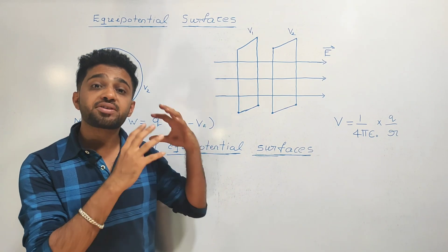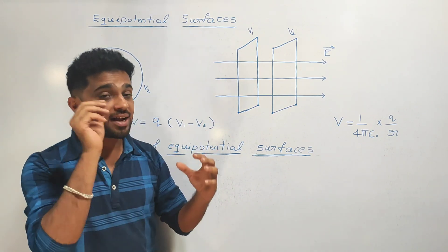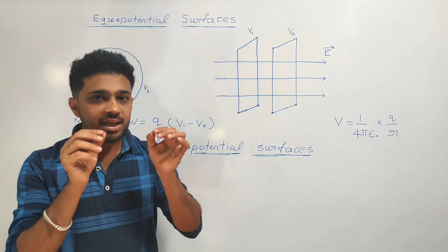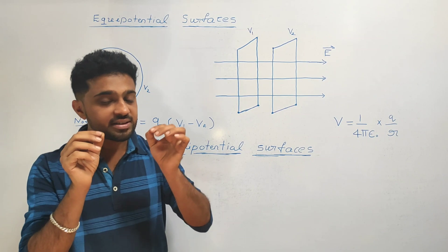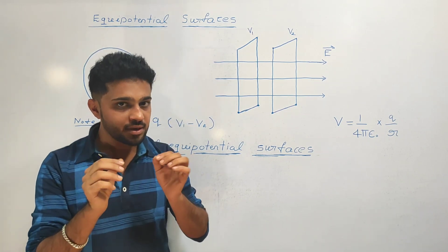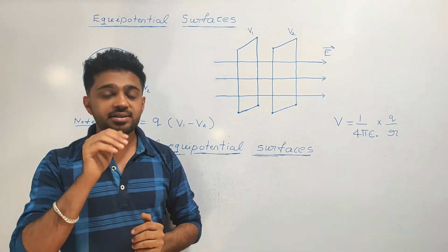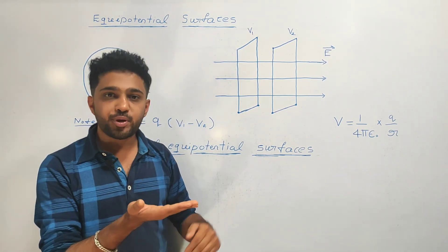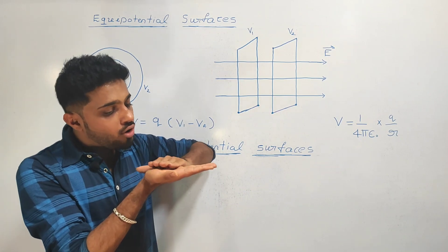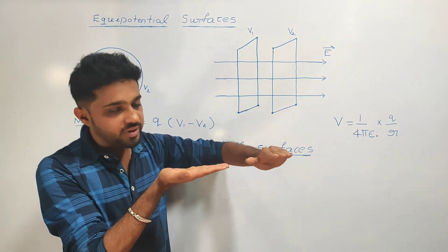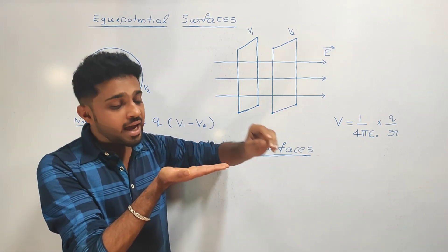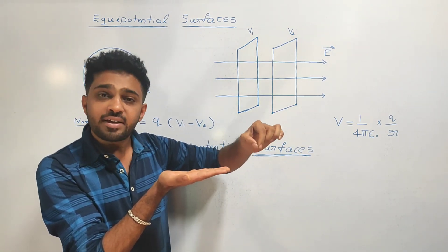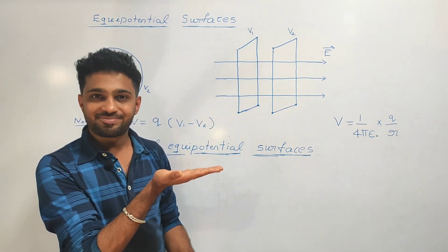Equipotential surface — an equipotential surface is a surface such that electrostatic potential on its surface at any point is constant.